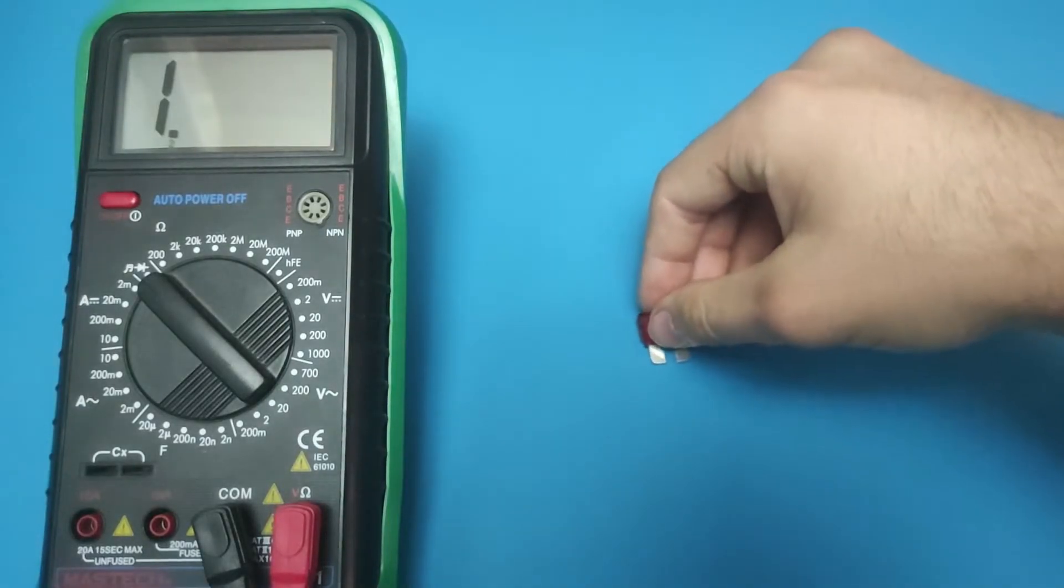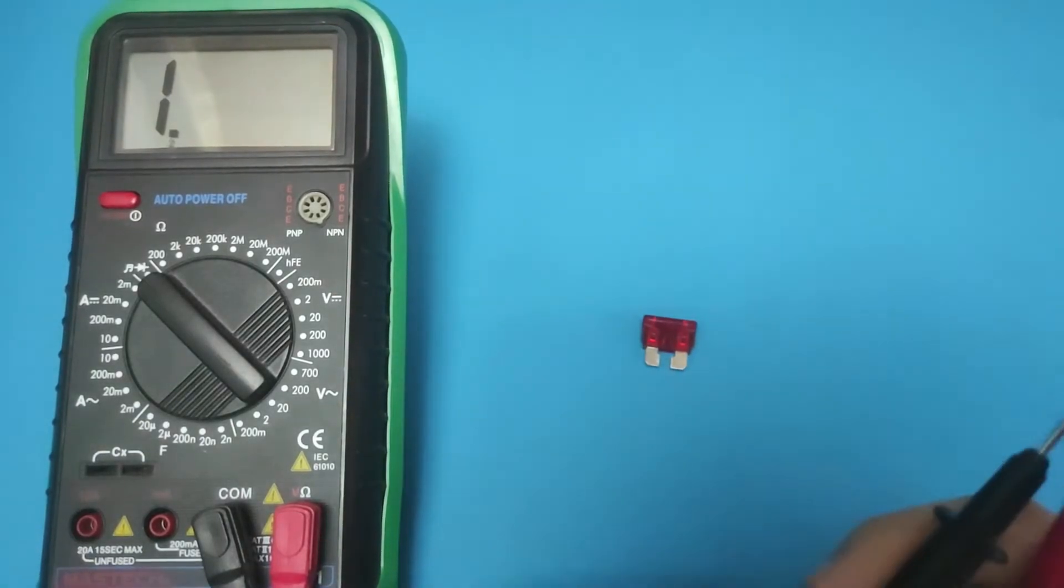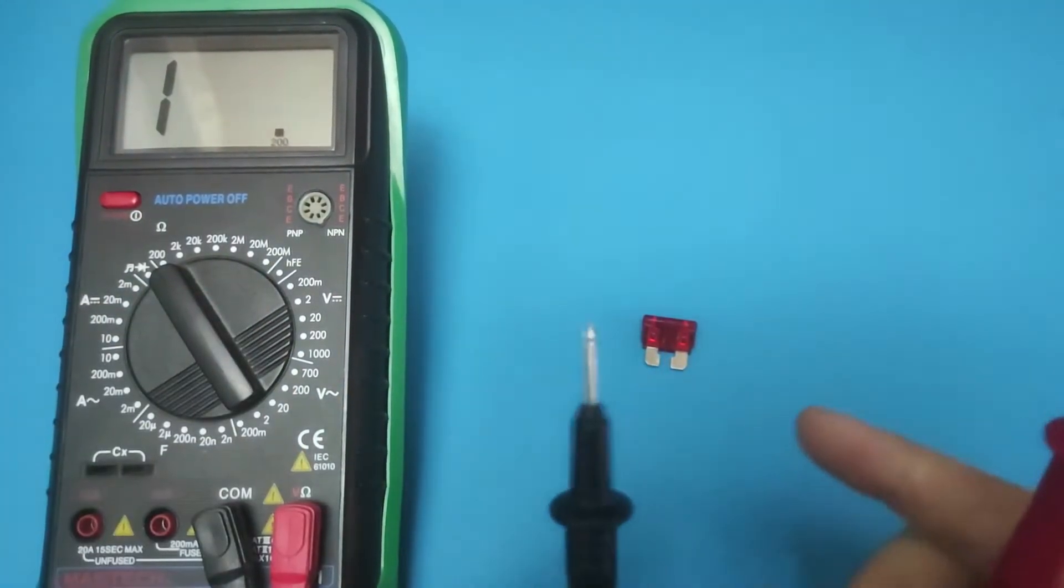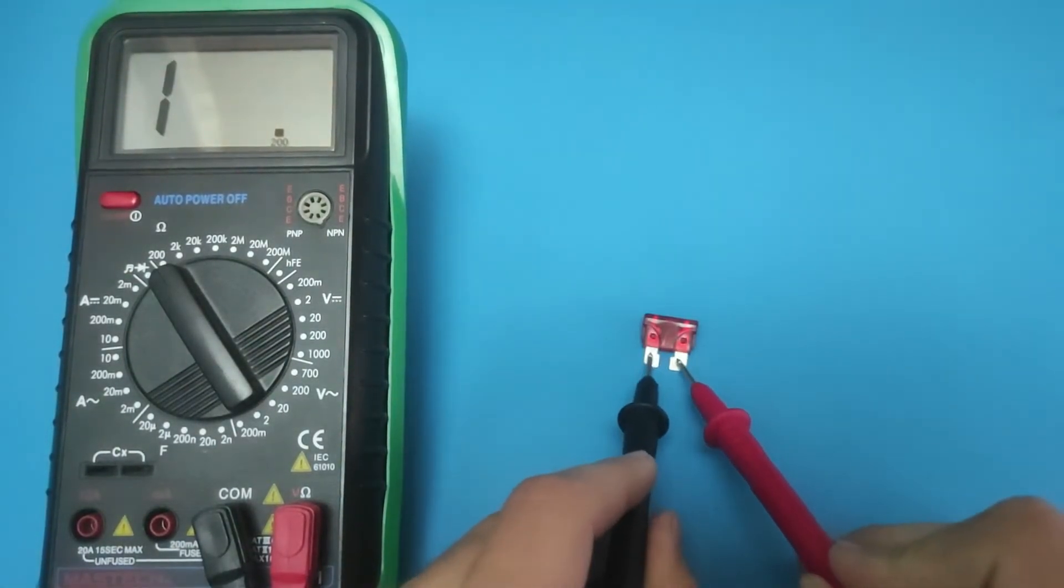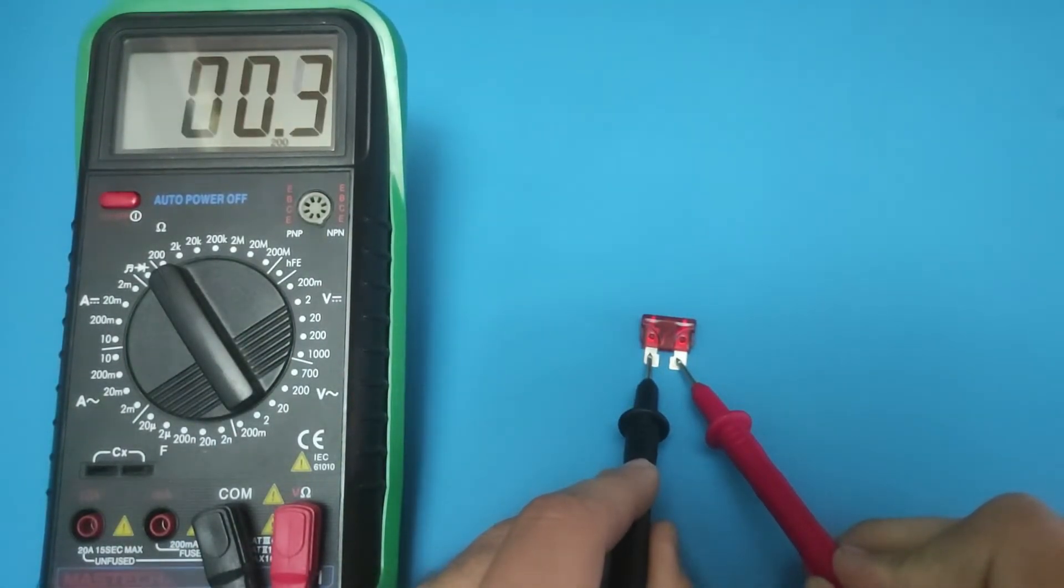Set the meter to the 200 ohm range. Place the multimeter probes on the two blade contact ends of the fuse and check the screen for a value after making proper contact. If you get zero, a value close to zero, or a beep, the fuse is in good condition.